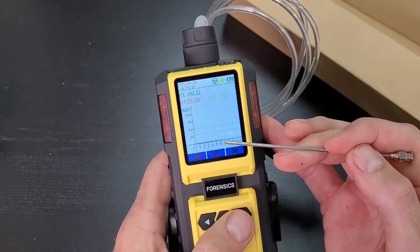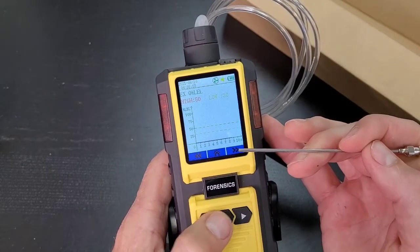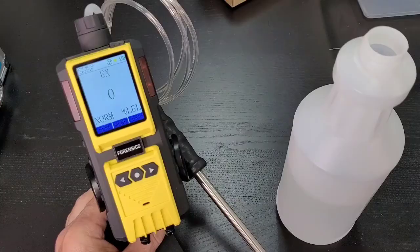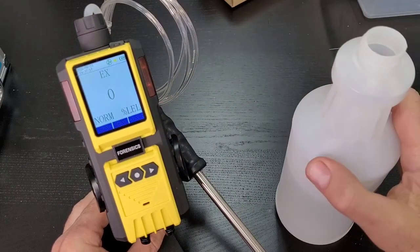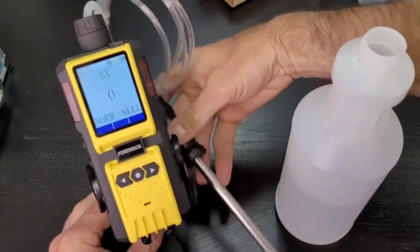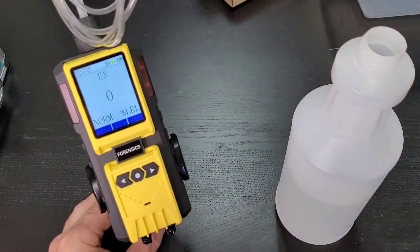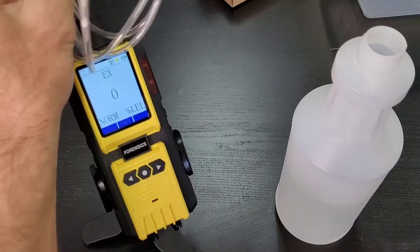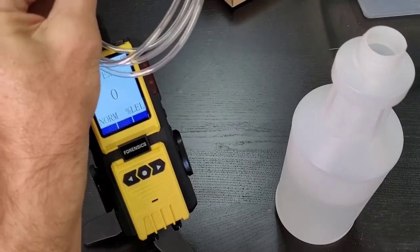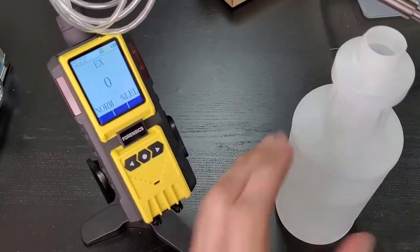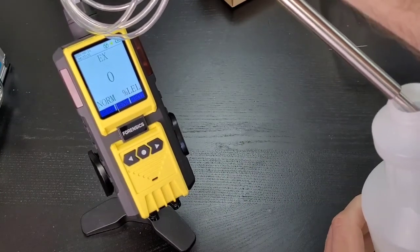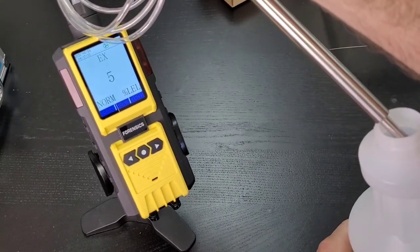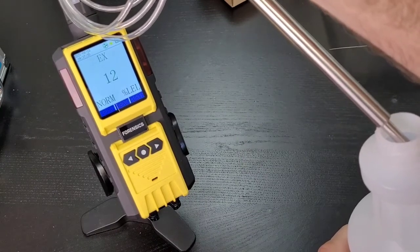As a quick demo, what I got here is a bottle of isopropanol, and we're just going to demonstrate how fast this is detecting the vapors coming from the isopropanol. It gives you a fair and reasonable understanding of how that all works. Just keep your eyes on the screen there.